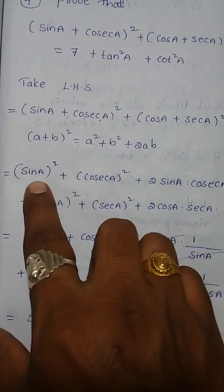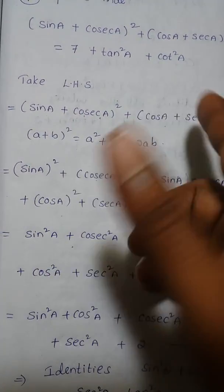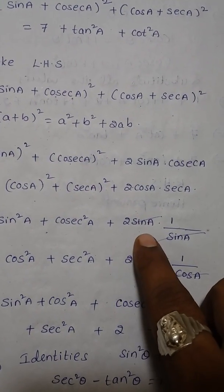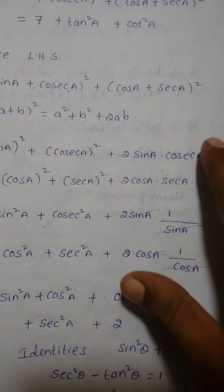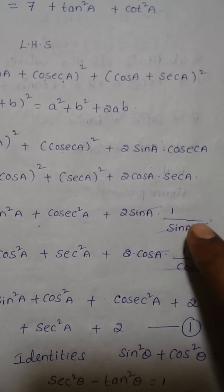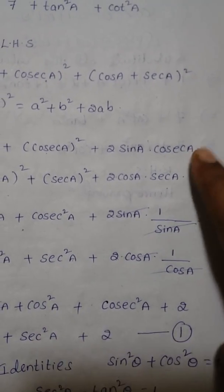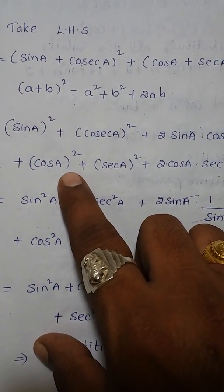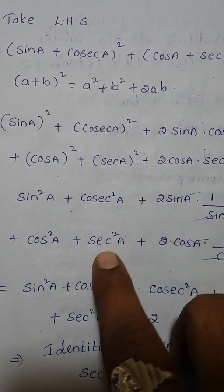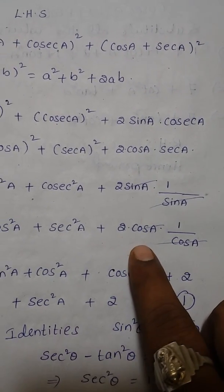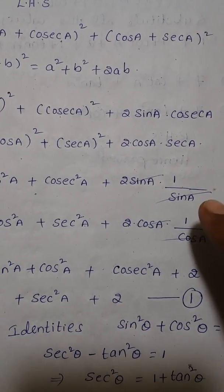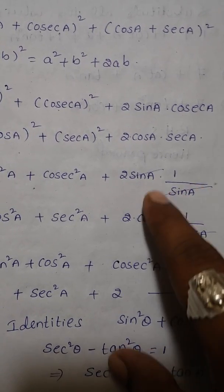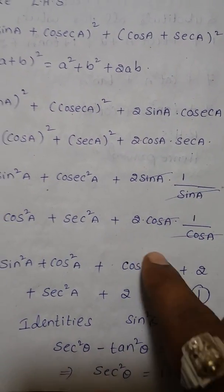So we have: sin²A + cosec²A + 2·sin A·cosec A + cos²A + sec²A + 2·cos A·sec A. Since cosec A = 1/sin A, the sin cancels giving 2. Similarly, sec A = 1/cos A, so cos cancels giving 2.